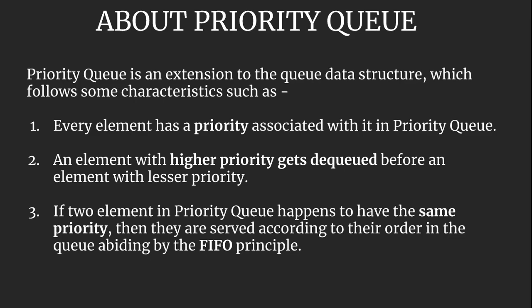The very first point states that every element has a priority associated with it in the priority queue — it's not only about the data but also about the priority. An element with a higher priority gets dequeued before an element with lesser priority. If two elements in the priority queue happen to have the same priority, they are served according to their order in the queue, abiding by the FIFO principle — that is, first in first out. These are the main characteristics of the priority queue.